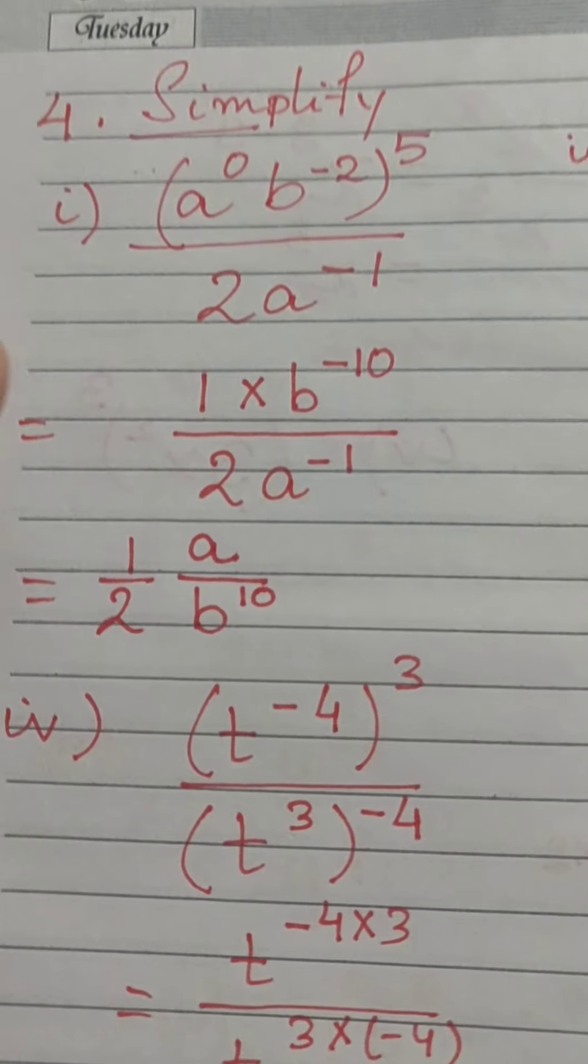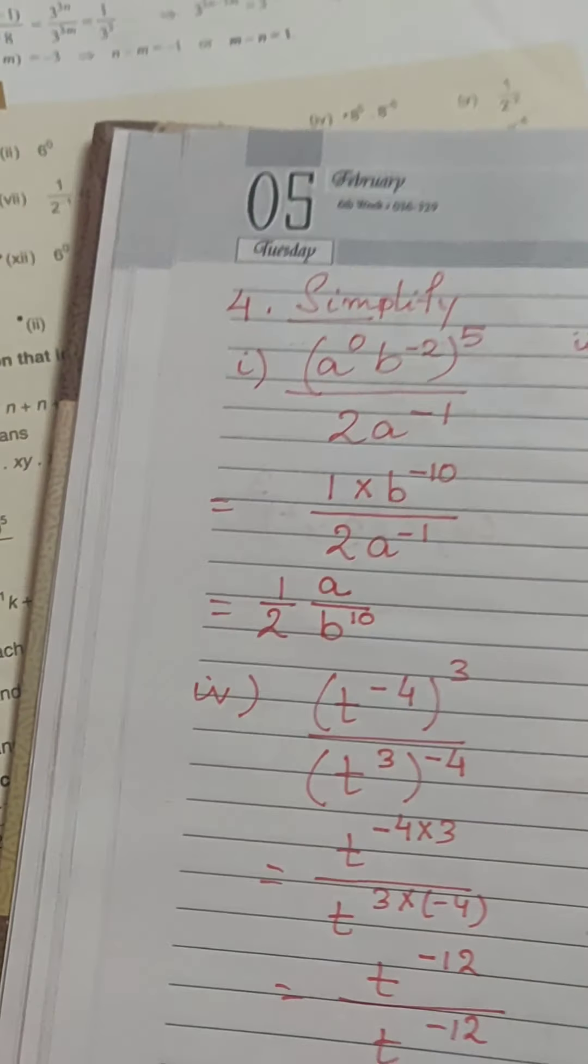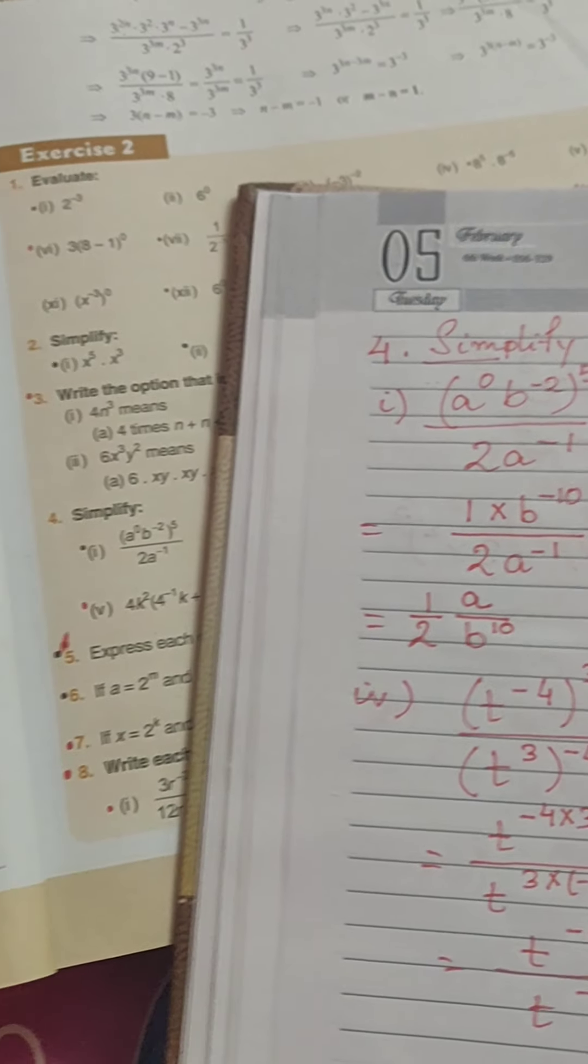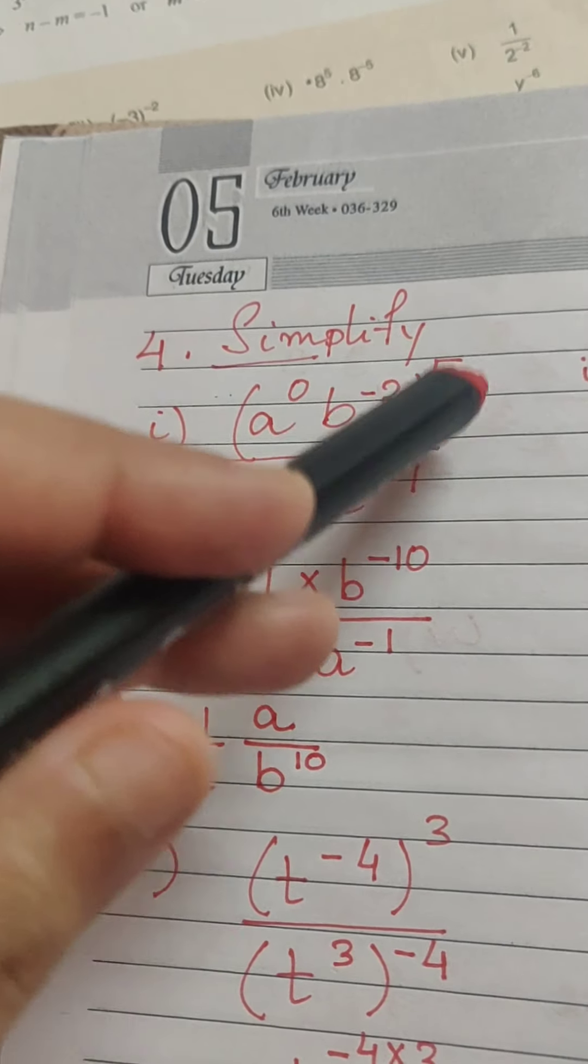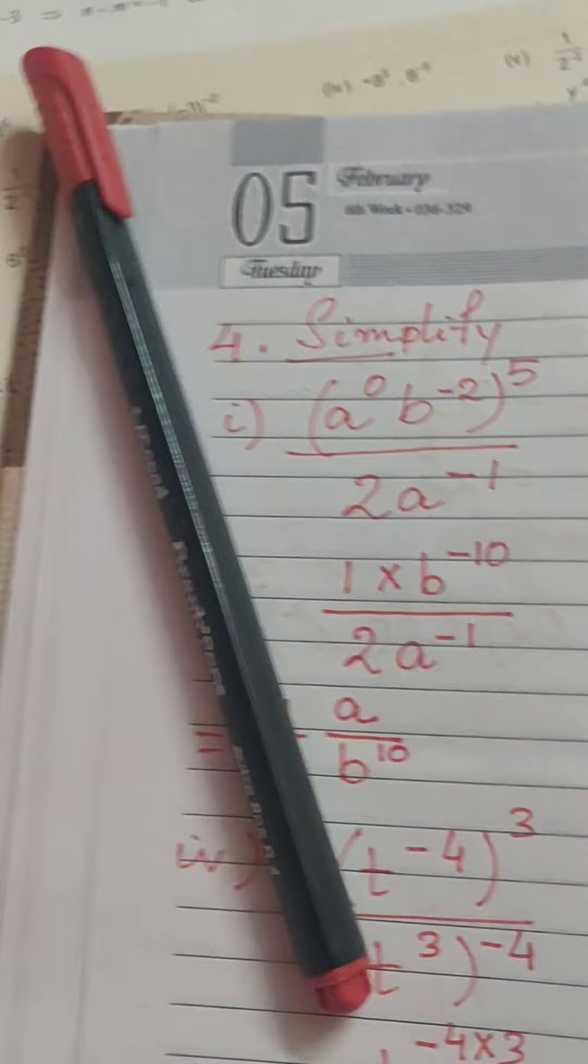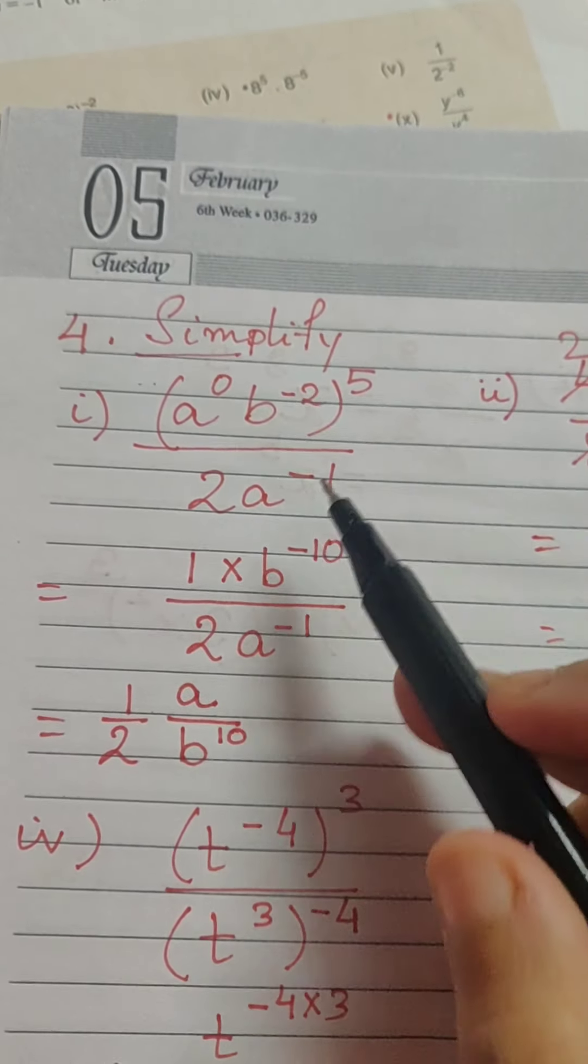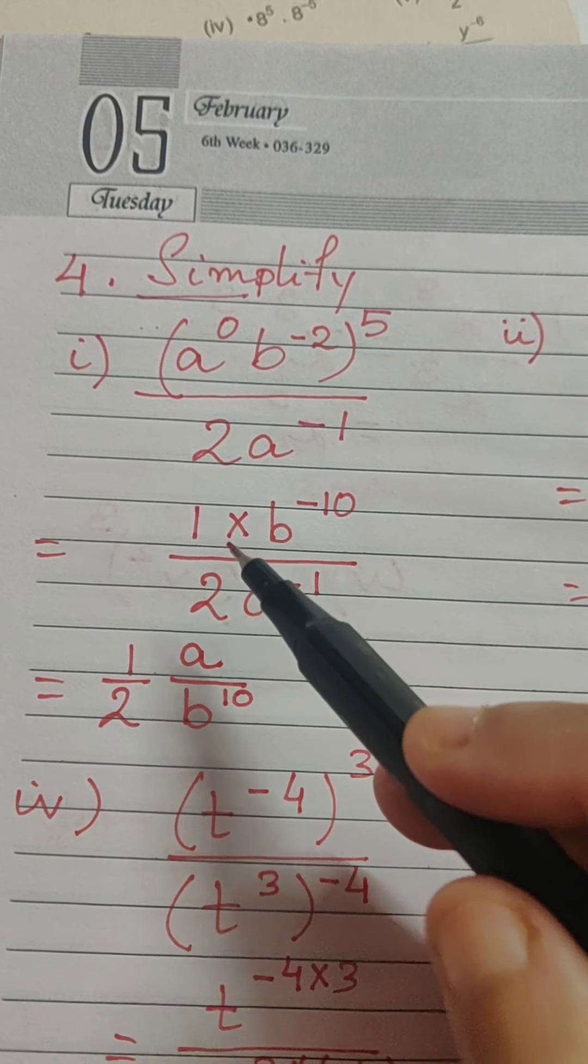Now, a to the power 0, anything raised to the power 0 becomes 1 which we know that we have written here. We know according to the law that in these cases the exponents get multiplied. So, b minus 2 or the exponent minus 2 of b gets multiplied with 5 we get minus 10 and in the denominator we have 2 a to the power minus 1.